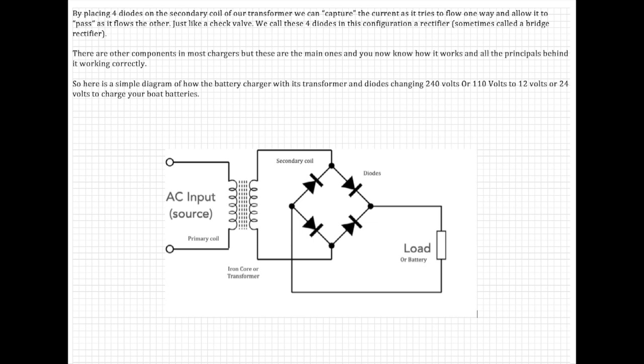By placing four diodes on the secondary coil of the transformer, we can capture the current as it tries to flow one way and allow it to pass as it flows the other, just like a check valve. We call four diodes in this configuration a rectifier, sometimes called a bridge rectifier. There are other components most chargers have, but these are the main ones. And you now know how it works and all the principles behind it working correctly.